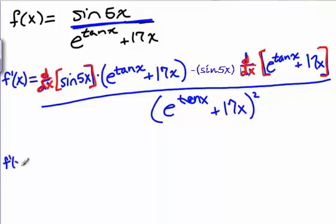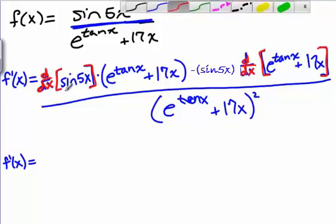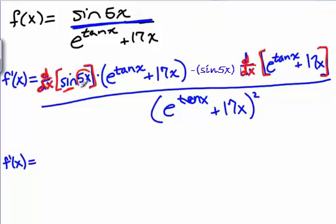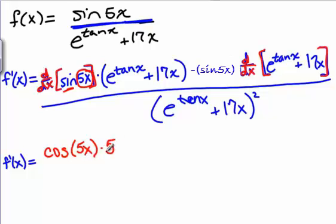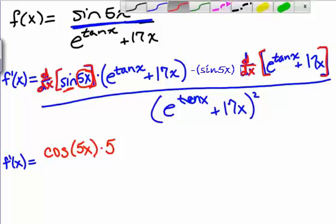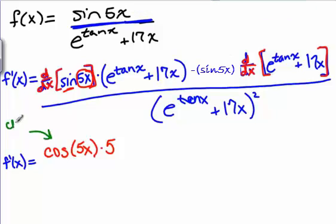We have f prime of x; now we need to take the derivative of sine of 5x. Here we're going to need a chain rule. The outside function is going to be sine, and the inside function is going to be 5x. I'm going to take the derivative of the outside function — the derivative of sine is cosine — and then keep the inside function unchanged, then multiply by the derivative of the inside function. The inside function is 5x, so its derivative is 5. That's the chain rule inside a quotient rule.